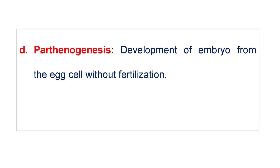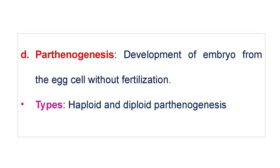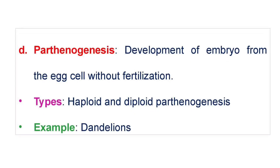Parthenogenesis is the development of an embryo from the egg cell without fertilization. Its types are haploid and diploid Parthenogenesis. Parthenogenesis is seen in Dandelions.